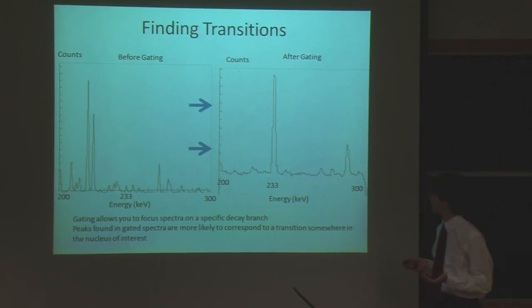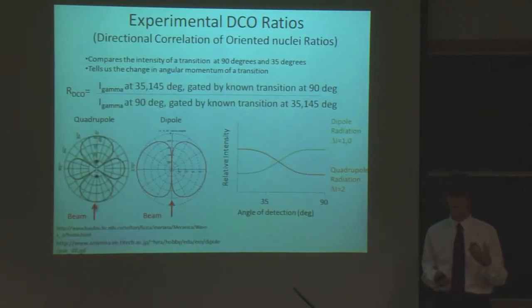So this shows how useful gating is. Before, this 233 band looks insignificant compared to all these other bands. But if we gate, we can show that this is clearly part of Selenium-71. Once we have the transitions, we can try and figure out the spin assignments.